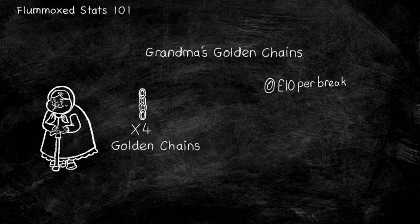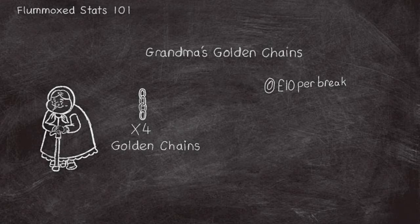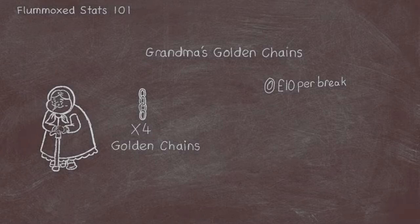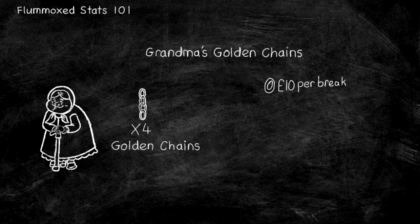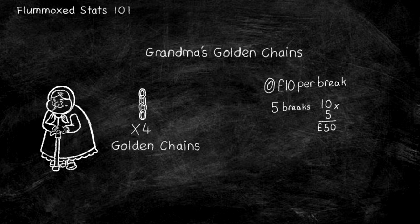I'll give you ten seconds to figure this out. Now let's work this one out. The most straightforward answer would be to break a link on the end of each of the five chains, then reattach those links back onto the next chain in the loop. This would cost you fifty dollars for the five links that were broken and resealed, and you have your necklace. But is there a better way? Yes, of course there is — I wouldn't be asking otherwise.